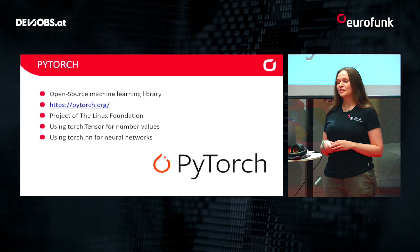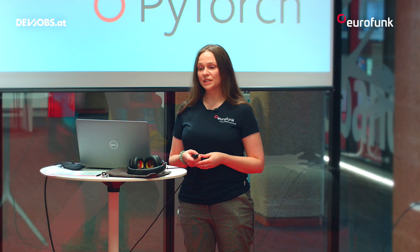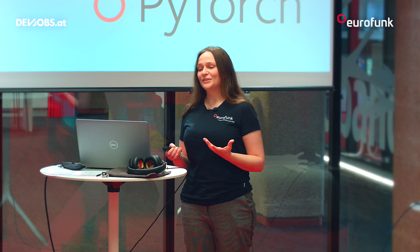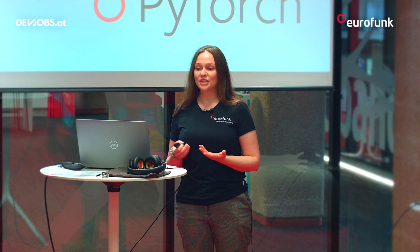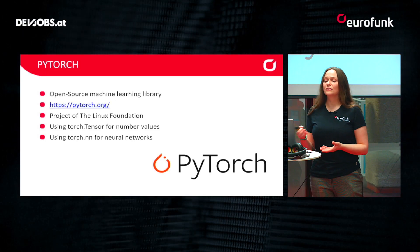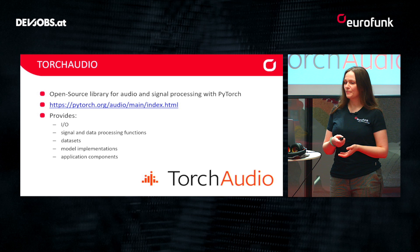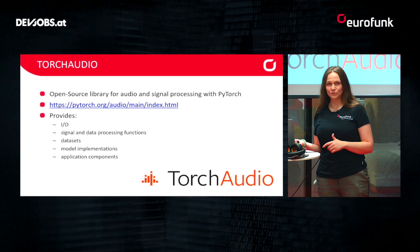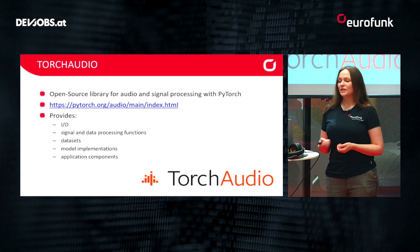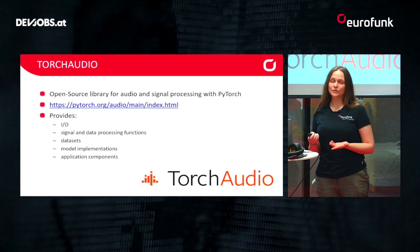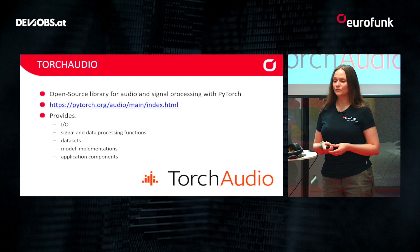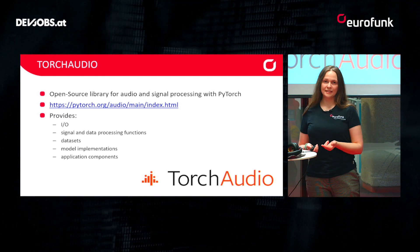We start with PyTorch. PyTorch is an open source machine learning library from the Linux Foundation. The basis of the system are Torch tensors, where you can put in the number values of the problem you want to train on, and neural networks. Another important tool used in this tutorial is TorchAudio — it's also an open source library that helps you with audio and signal processing. It has input-output components, supports signal and data processing functions, and also provides datasets on its own.